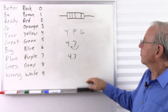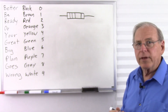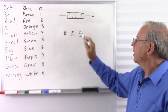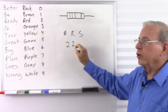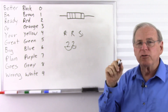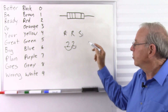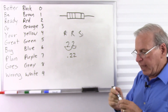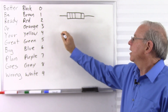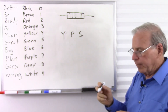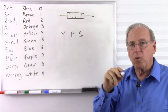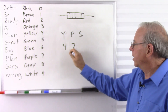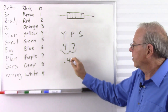What if we want an even smaller resistance? Silver moves the decimal point two places to the left, making the number smaller than gold. Red, red, silver: two and two, move two places — 0.22 ohms. Yellow, purple, silver: four and seven, move two places — 0.47 ohms.